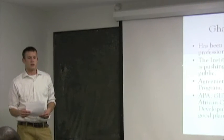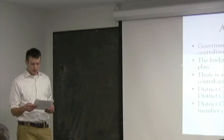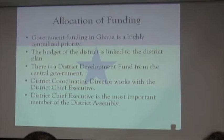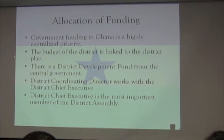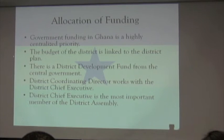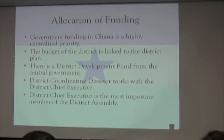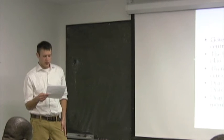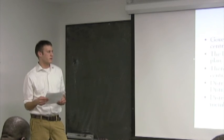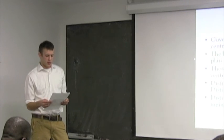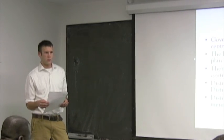Regarding funding allocation in Ghana, districts compete for government and external funding. Government funding in Ghana is highly centralized and the budget is linked to each district's plan. The district fund comes from the central government, and the district coordinator works with the chief executive. The district coordinator is nominated by the president and approved by two-thirds of the members elected by the district assembly.